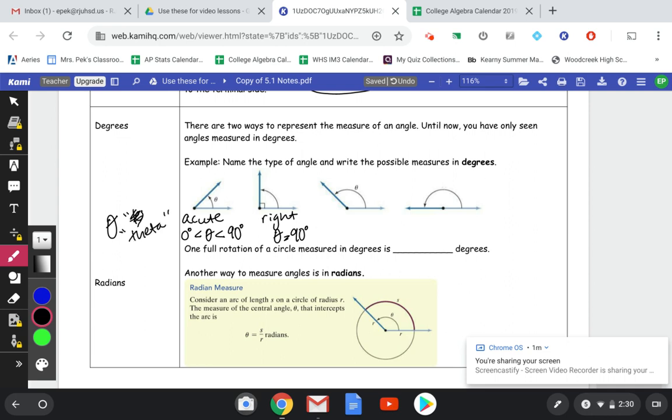Here we have an obtuse angle theta, which is anything between 90 degrees and 180 degrees. And then we have our straight angle, which is where theta equals 180 degrees. And one full rotation of a circle measured in degrees is 360 degrees all the way around the circle.